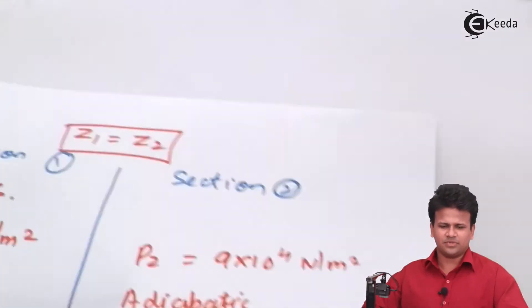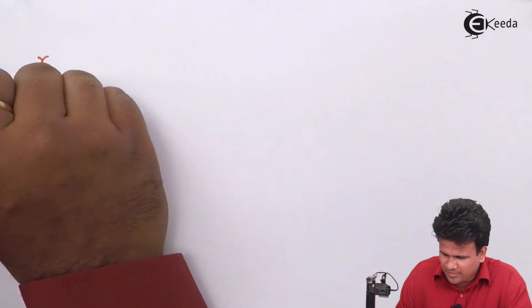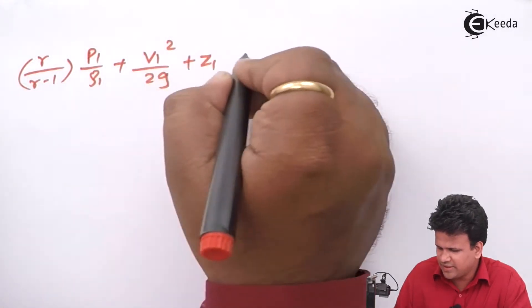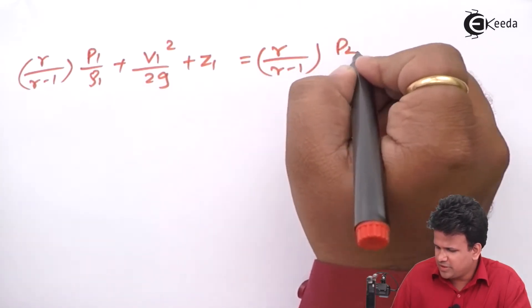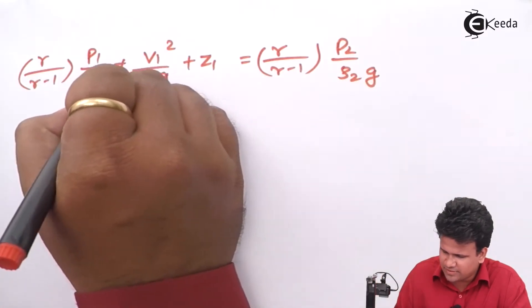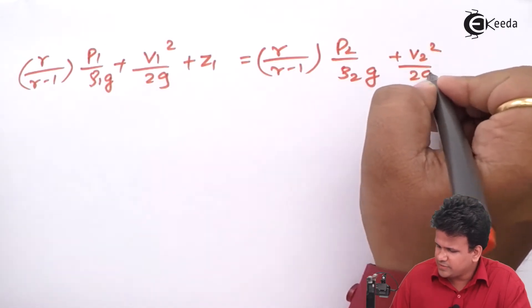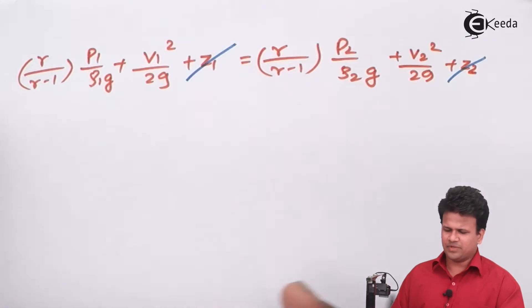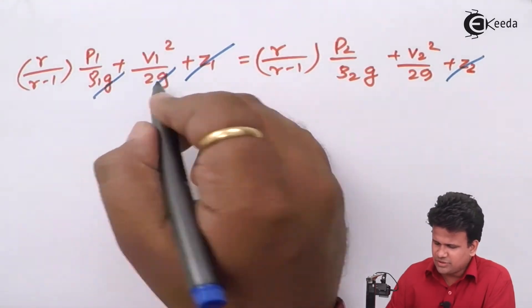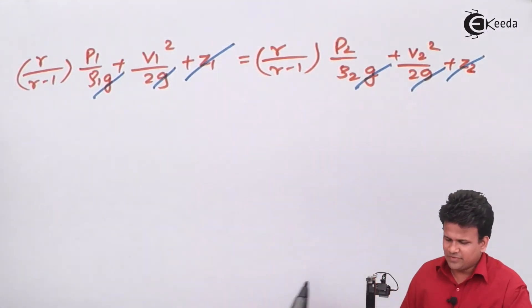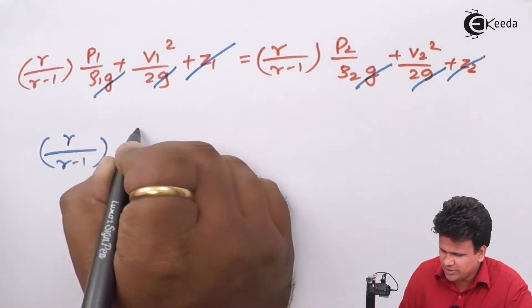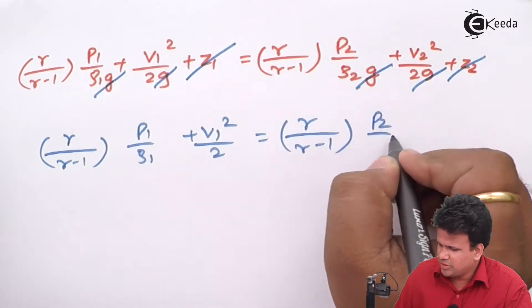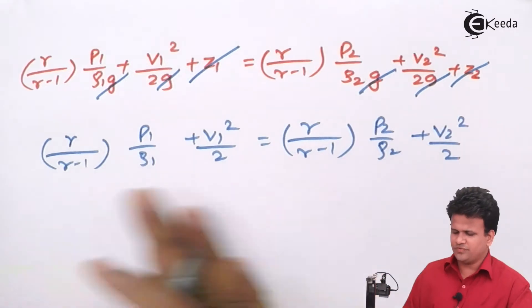Bernoulli's equation for adiabatic process is: γ/(γ−1) · P1/ρ1 + V1²/2g + Z1 = γ/(γ−1) · P2/ρ2 + V2²/2g + Z2. Since it is a horizontal pipe, Z1 = Z2 and the g terms cancel, simplifying to: γ/(γ−1) · P1/ρ1 + V1²/2 = γ/(γ−1) · P2/ρ2 + V2²/2.